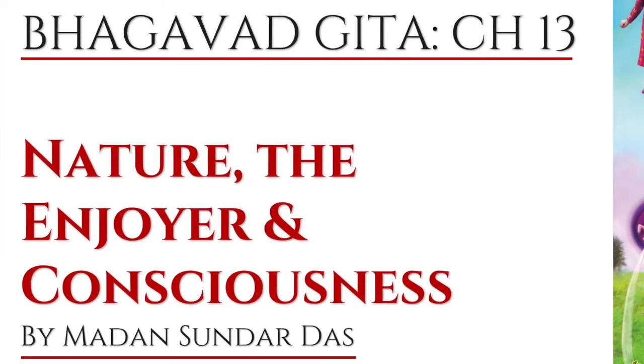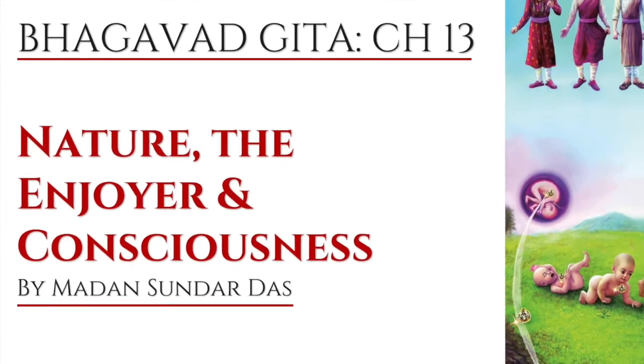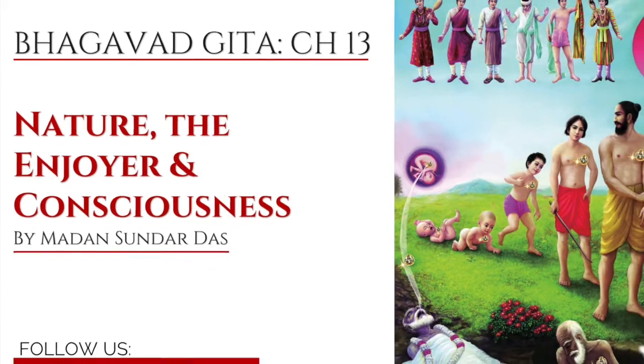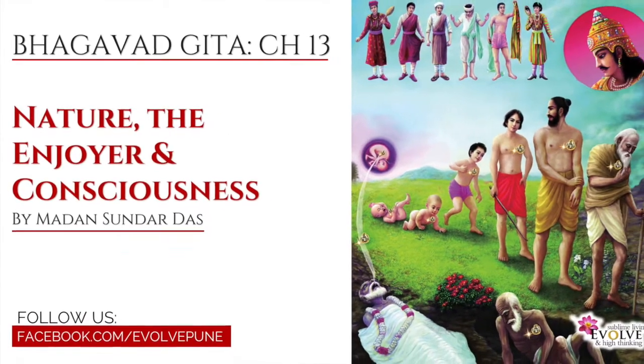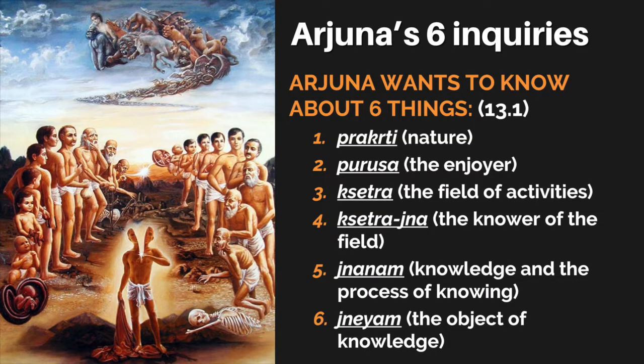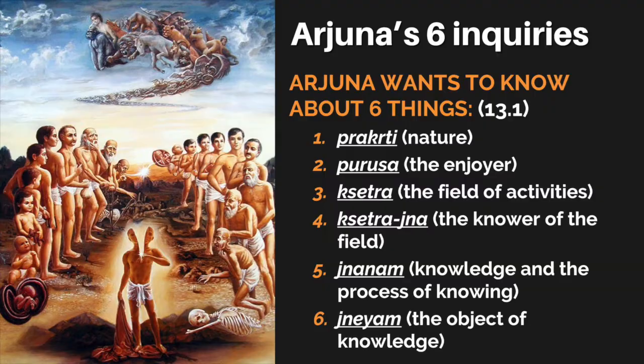In this particular chapter, there will be discussion on six questions asked by Arjuna in sets of three. The first set is Purusha and Prakriti — who is Purusha and who is Prakriti? The second set is Kshetra and Kshetragya — Kshetra means the field of activity, and Kshetragya means the knower of the field. The third set is Jnana and Gneyam — Jnana is the process of knowledge and Gneyam is the object of knowledge.